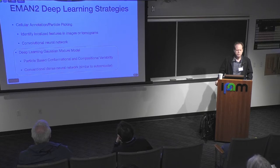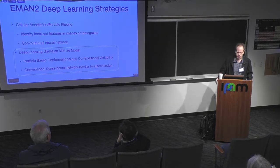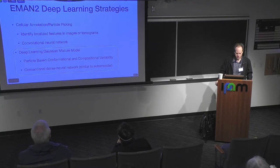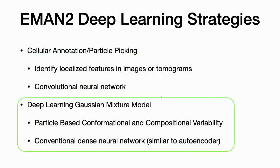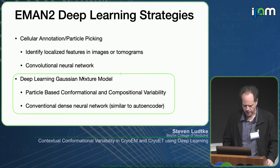There are two general deep learning strategies we've adopted in EMAN2, the software that my group develops. One is designed to annotate tomograms — so if you have a three-dimensional volume of a cell and need to figure out what the different bits are, we have a convolutional neural network strategy for that. But then this deep learning Gaussian mixture model is a bit newer, and that's what I'm going to be spending most of my time on today.